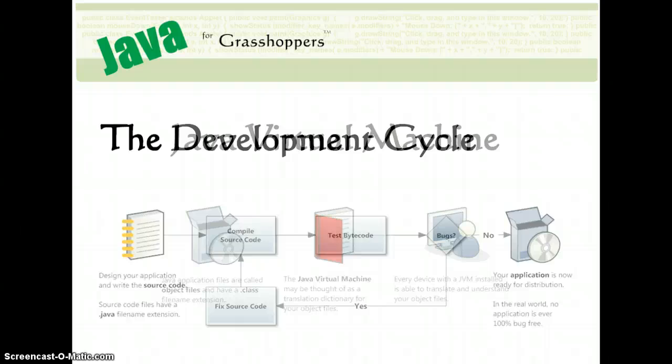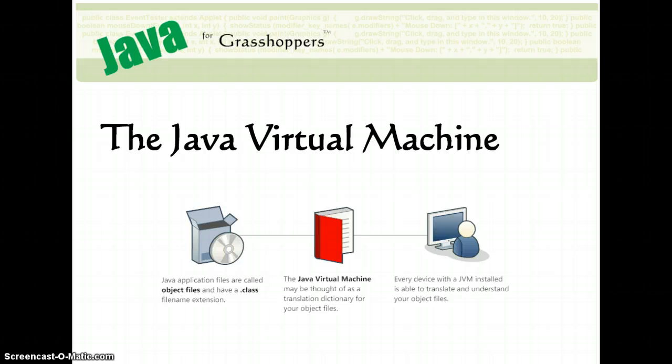So the Java virtual machine, which I promised I would talk about here, is like a translation dictionary for your object files. Okay, so it takes your byte code object files, as you can see here on the left, I've represented it as a software package of sorts. The Java virtual machine can take your object files and then translate them into machine code. Machine code is even more cryptic than byte code, but it's very specific to individual machines, whereas byte code in your object files is more abstract and a more general set of instructions.